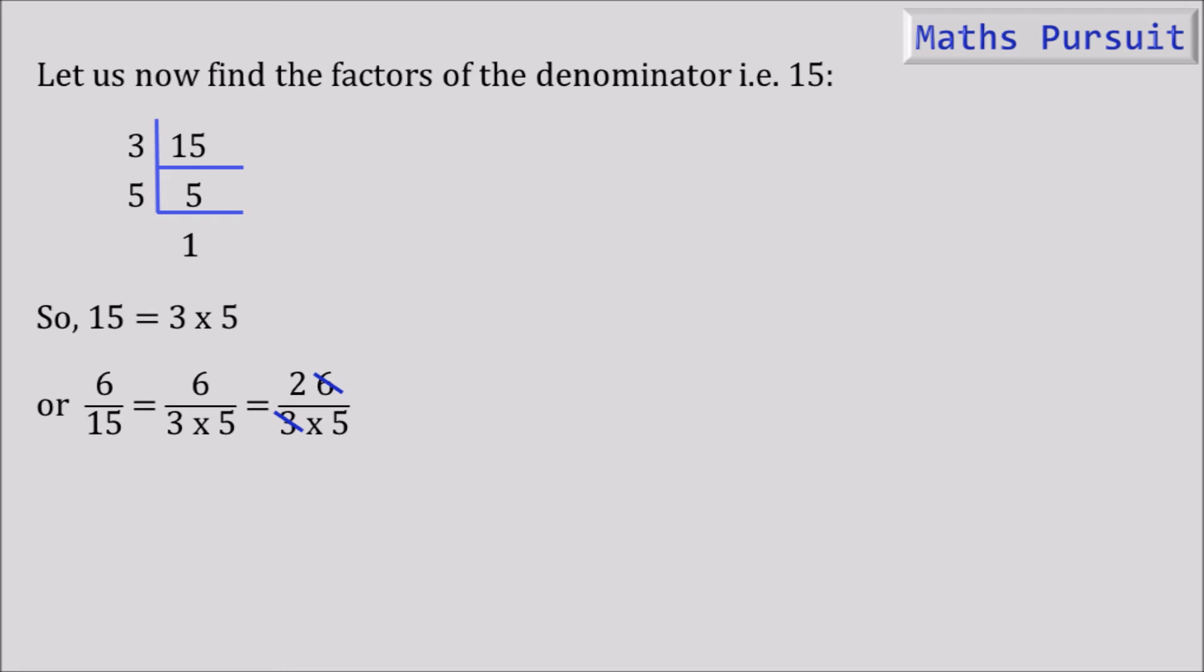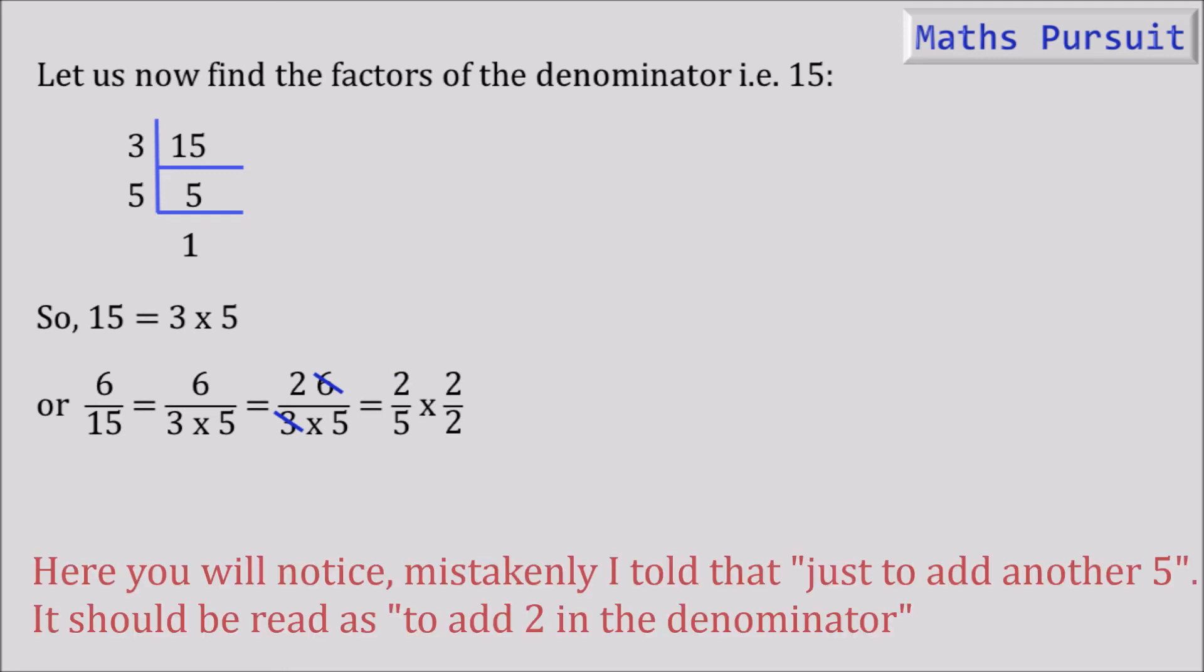Now, in order to put the denominator in the form of 2 to the power n and 5 to the power m, I will multiply 2 in the numerator and 2 in the denominator. Because we already have 5 in the denominator, I want to add another factor of 2.